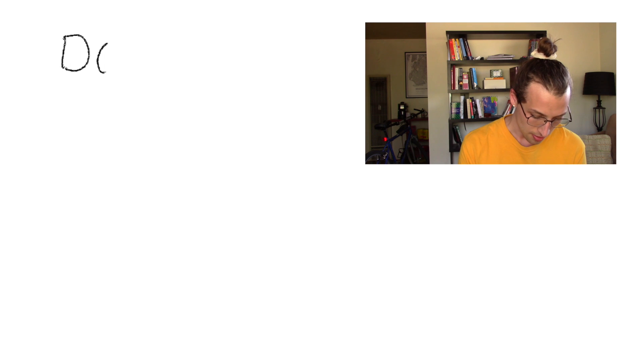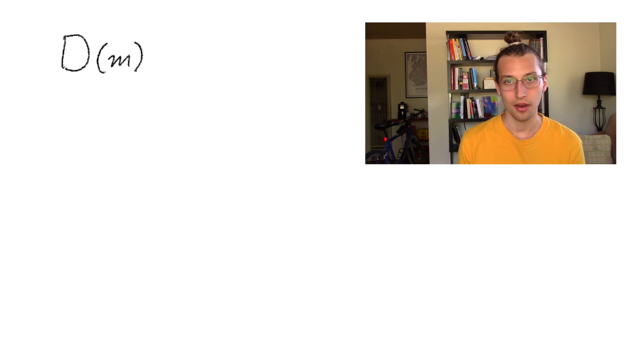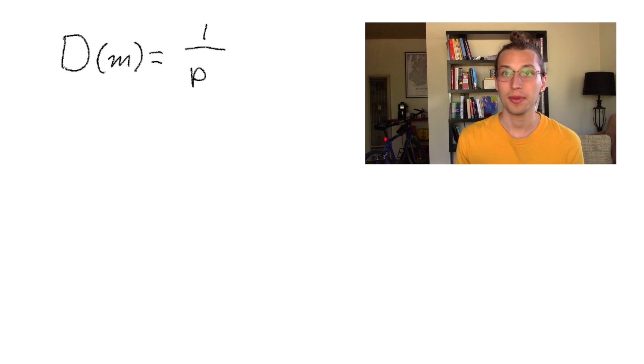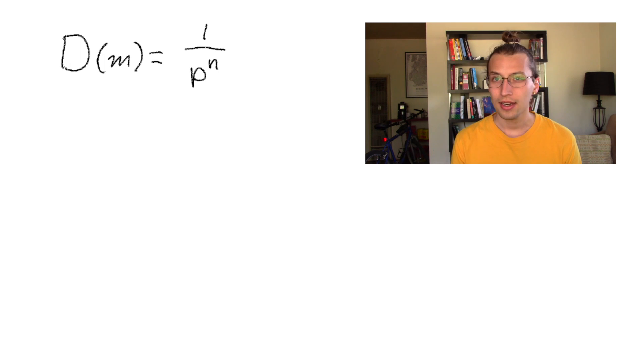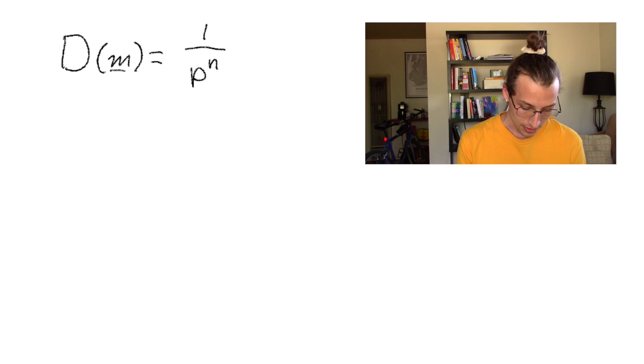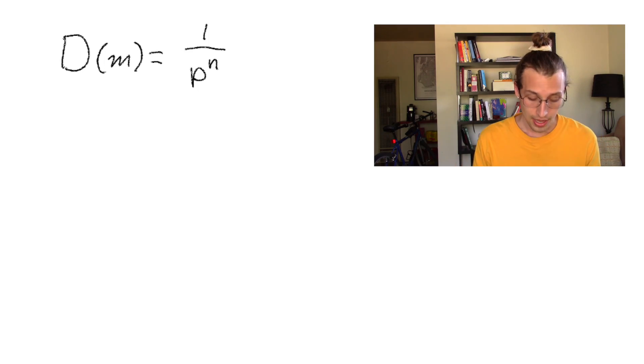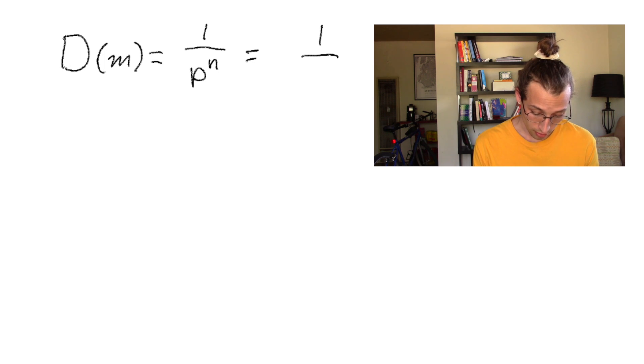The definition of the p-adic metric is this: D of some number M, which means the size of M, equals 1 over P to the power of N, where P is the prime number base we're in. So if we're in a 3-adic system, P is 3; if we're in a 2-adic system, P is 2. And N is the number of times that M is divisible by P. So what that means is that if you want to know how big a p-adic number M is - maybe it's a 3-adic number - you ask how many times does 3 go into this number? And if 3 goes into your p-adic number maybe 5 times, then the size of that number would be 1 over 3 to the 5.